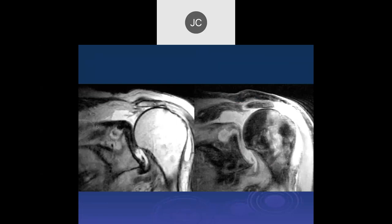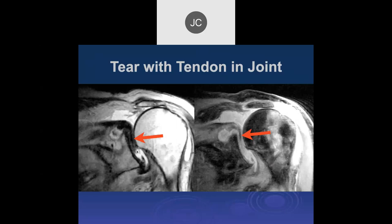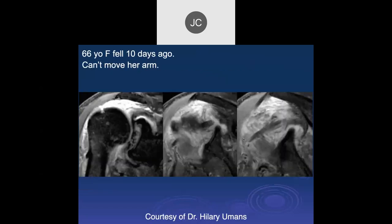Two coronal images show a large subacromial/subdeltoid fluid collection. The supraspinatus looks completely torn, with the torn tendon likely in the joint space. The humeral head is elevated with edema in the humeral head. This is uncommon but should be reported to the referring physician — a situation where the torn tendon has actually extended into the joint space itself.